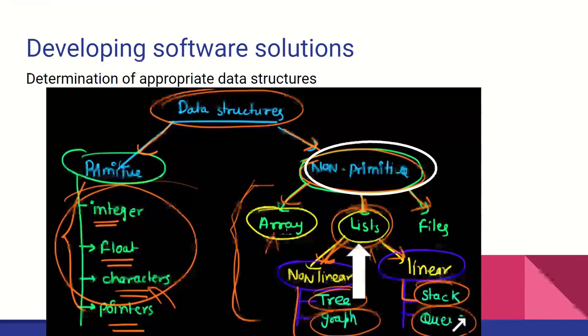Lists support dynamic memory allocation. The memory spaces allocated can change at runtime, and there are two lists that we can use, linear and non-linear.